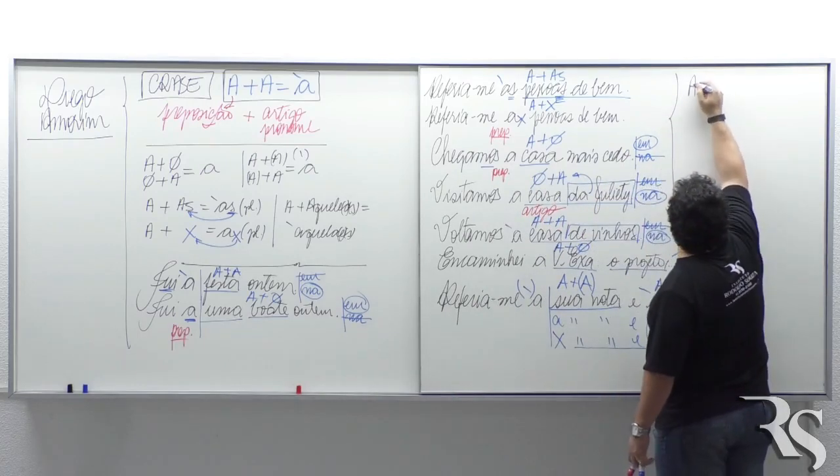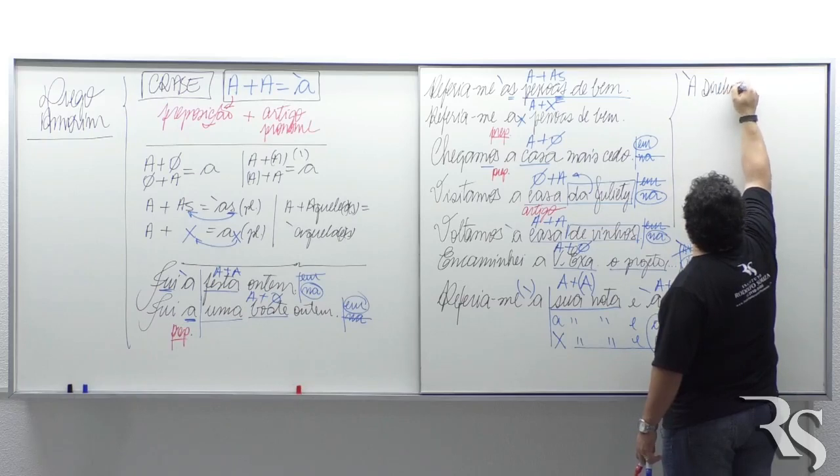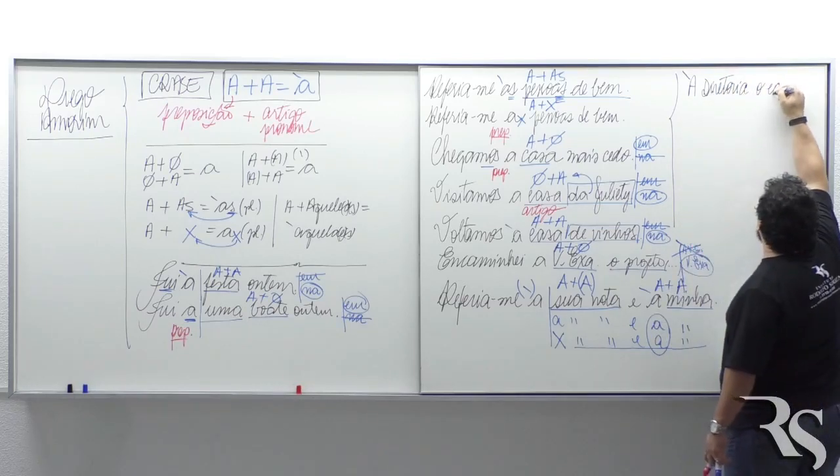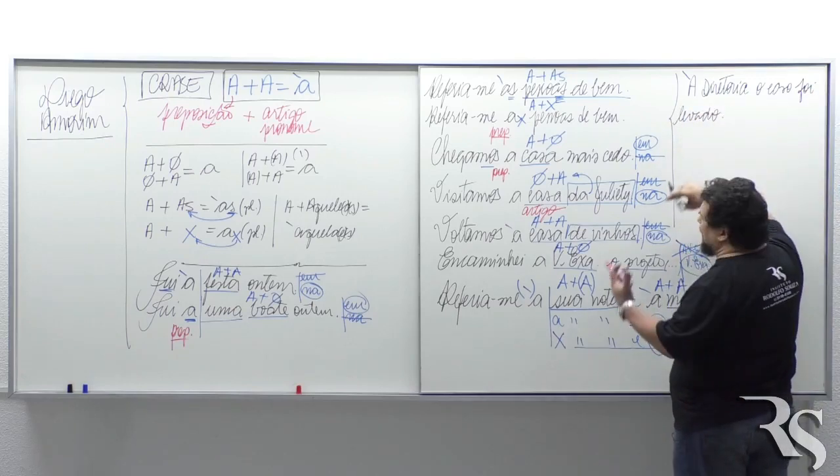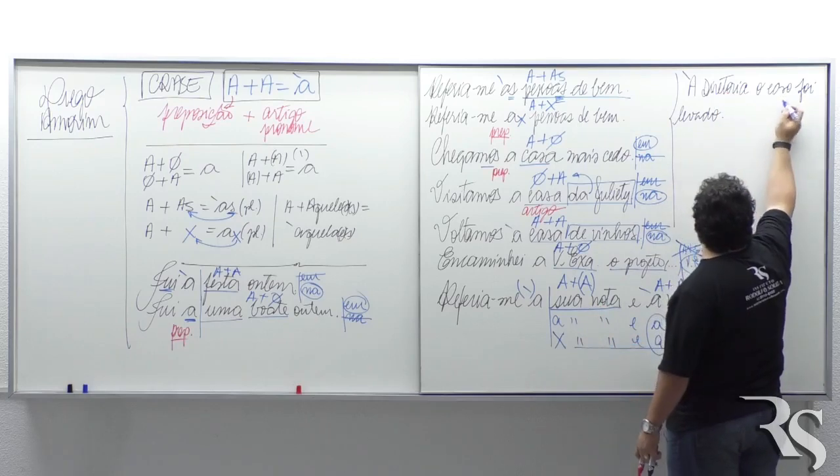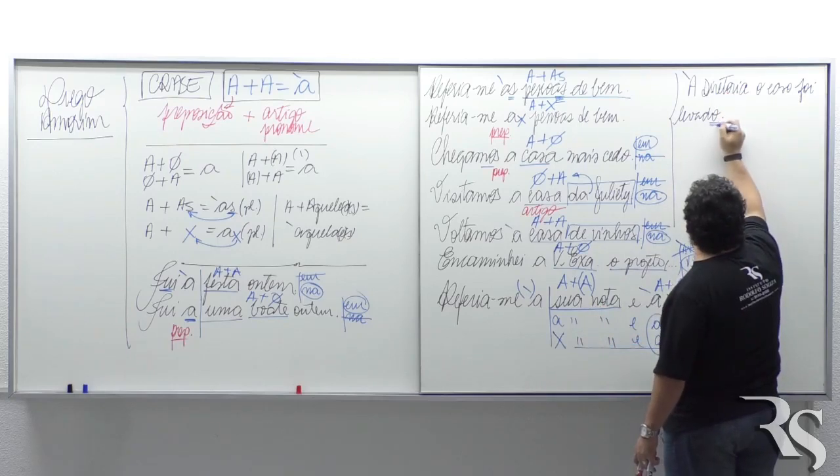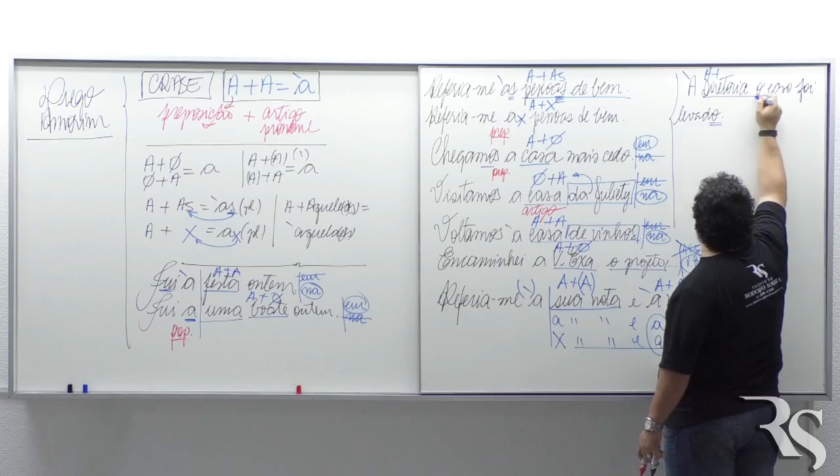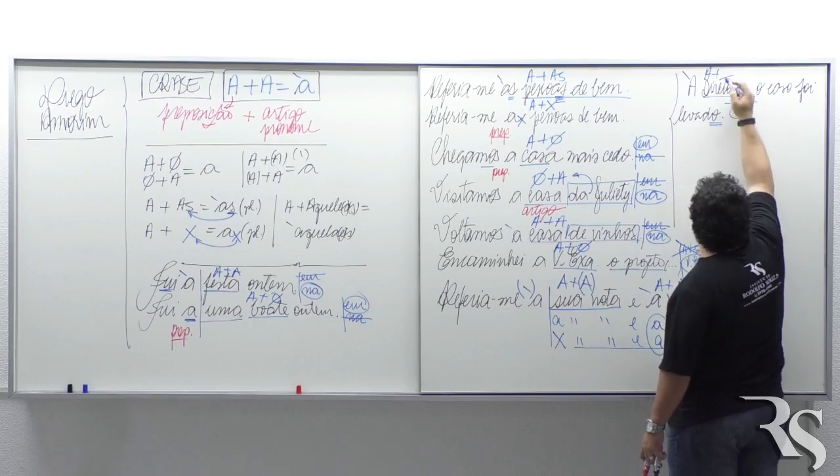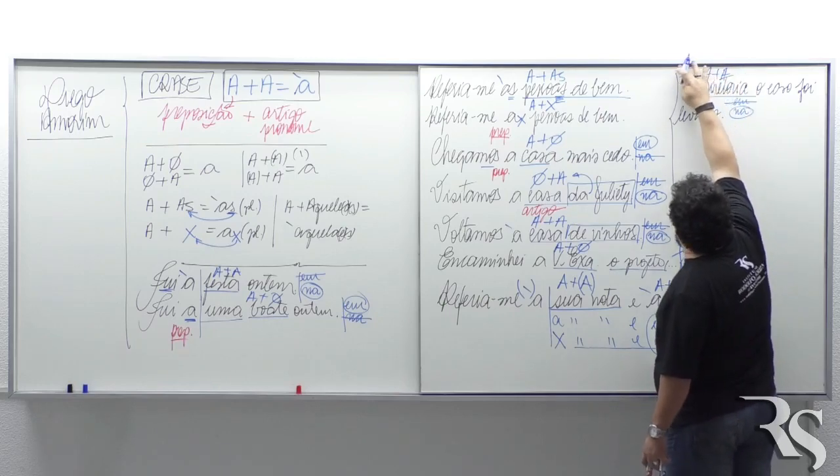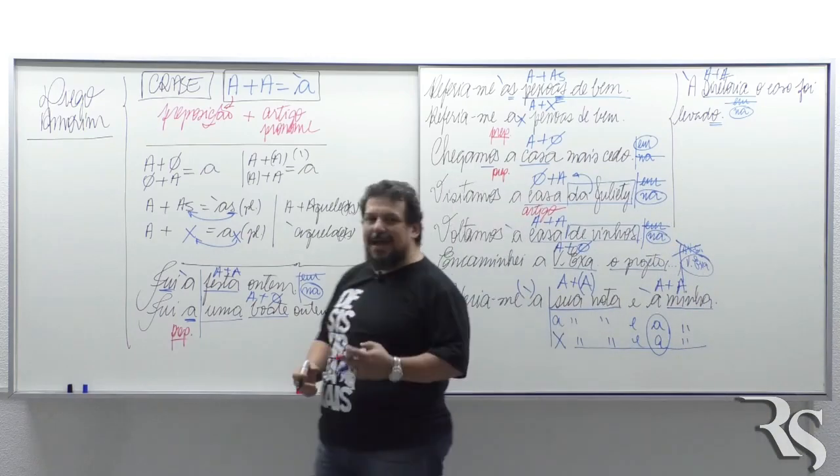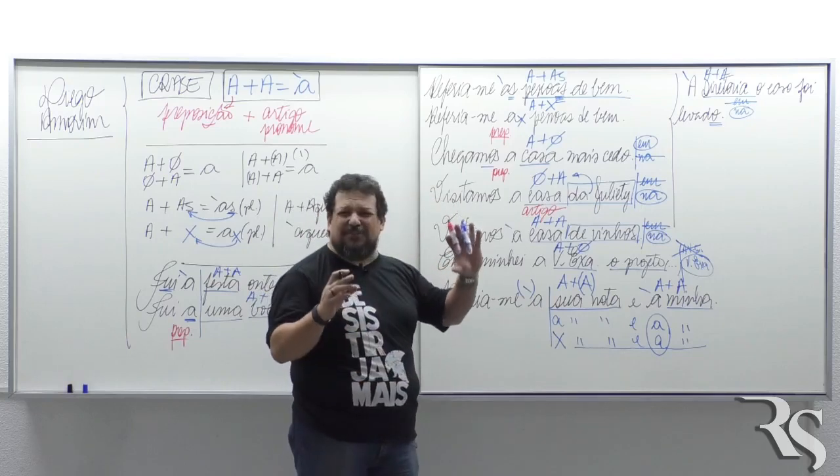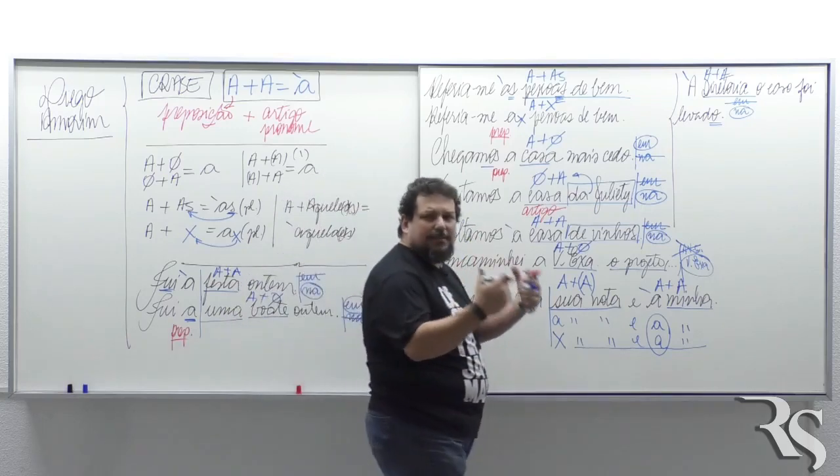Eu posso começar uma frase com crase. A diretoria. O caso foi levado. Posso começar com crase? Se tiver dois A's pode. O caso foi levado à diretoria. Quem é levado, é levado a. Mais diretoria. Eu estive em diretoria ou na diretoria? Na diretoria. Tem A, tem dois, tem que ter crase. É só testar os A's. Teste.